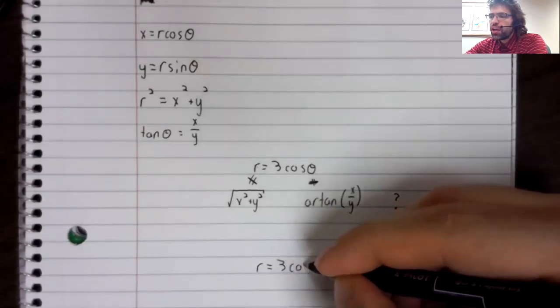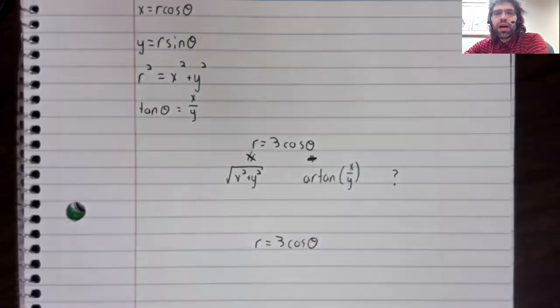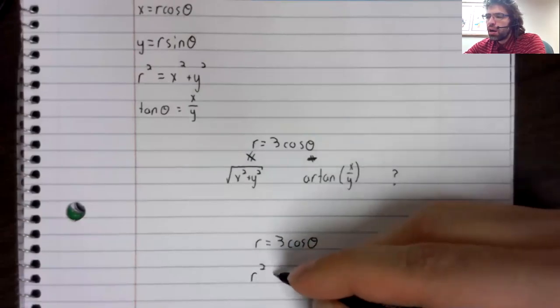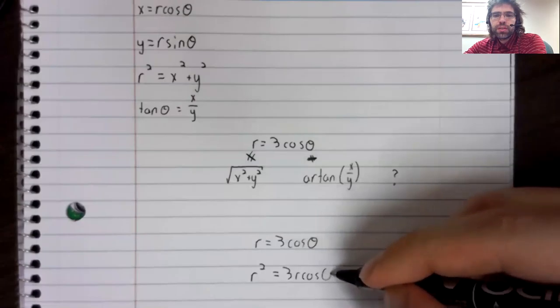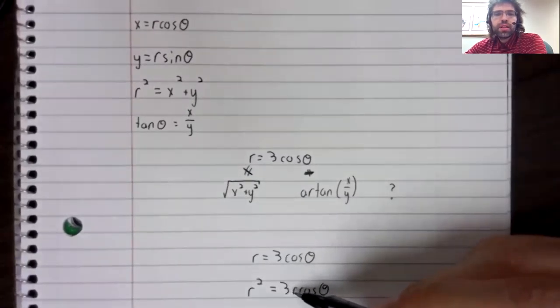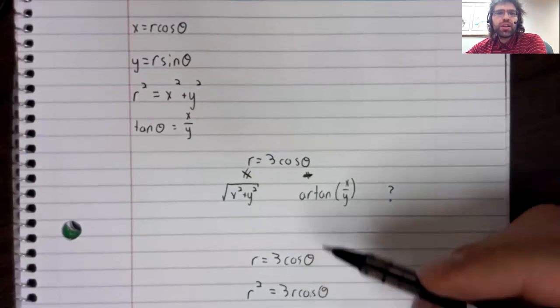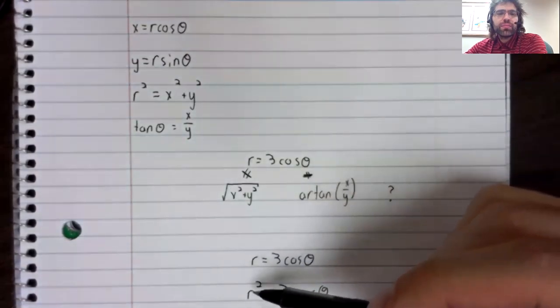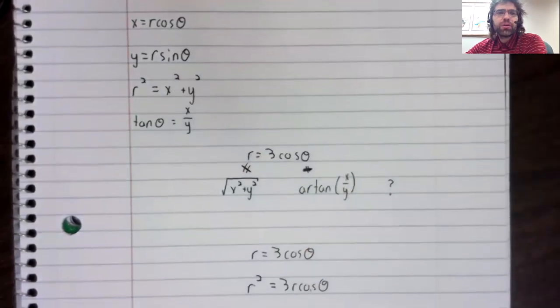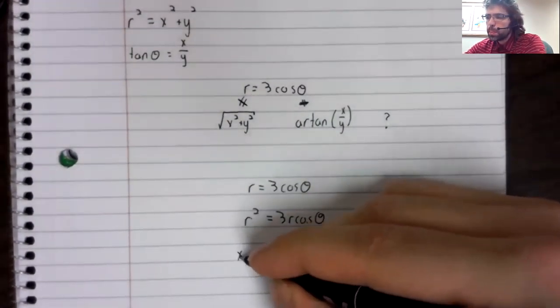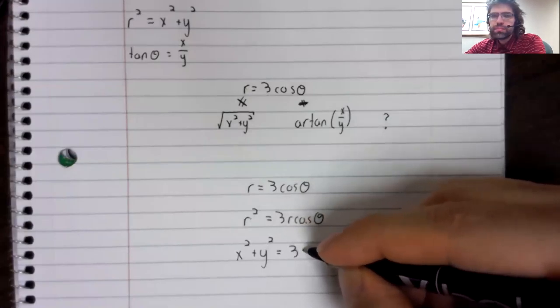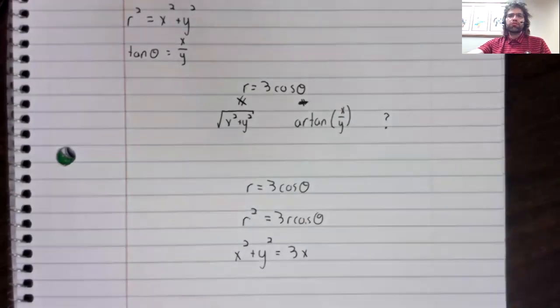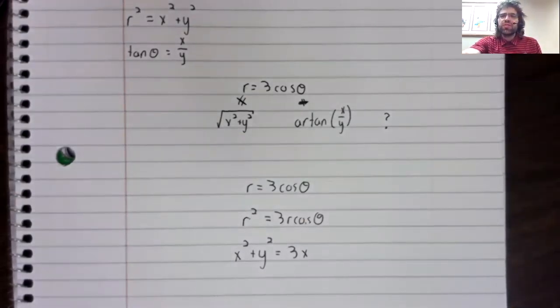Well, if we have an equality, we can multiply both sides of it by r to go from this equality to this equality. And now r times the cosine of theta is x. R squared is x squared plus y squared. x squared plus y squared equals 3x. And we have successfully gone from polar to rectangular coordinates.